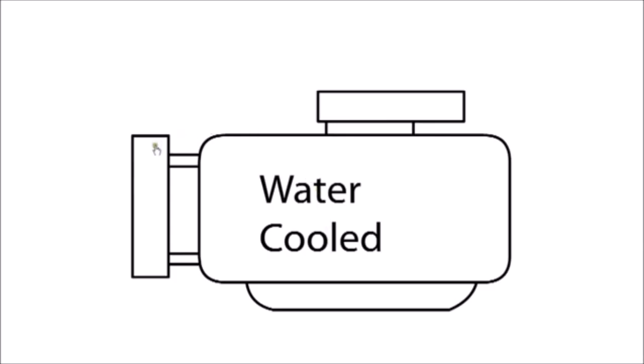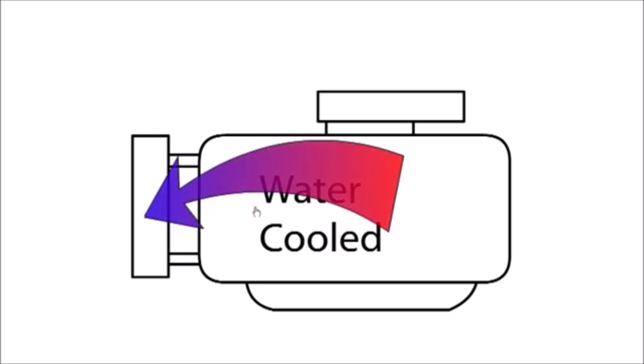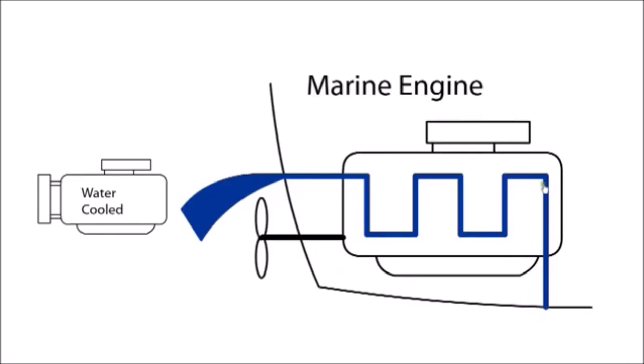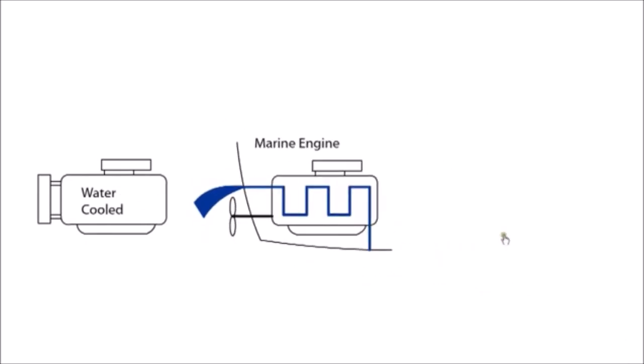Water-cooled engines use a liquid to remove heat fast enough to keep temperatures low so the engine can survive. Marine engines use the volume of water to directly cool the engine, while air-cooled engines use a large volume of air and a fan to maintain engine temperature.